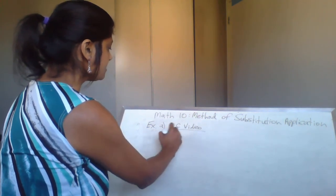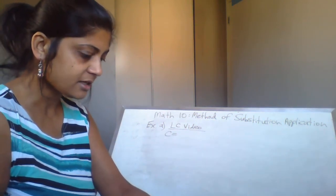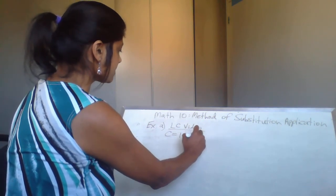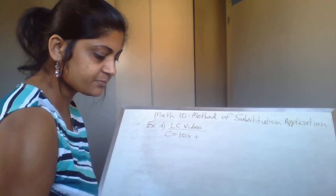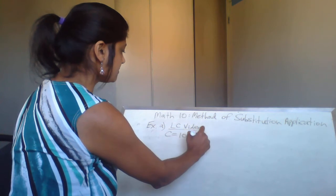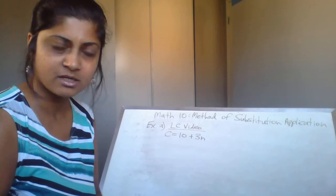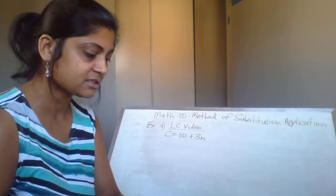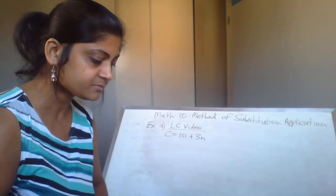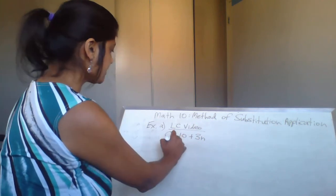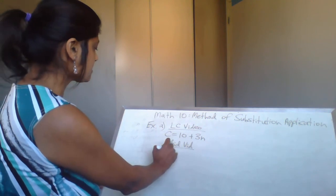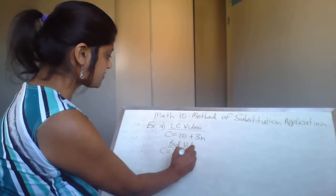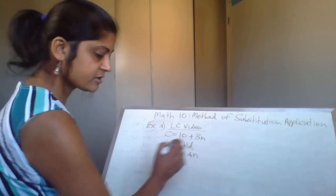So we're going to put LC Video and we're just going to use C for cost. LC Video rents the game machine for $10, so $10 here, and the video games is $3 each, so 3N. In this case, if you read the question one more time, there's only one variable — it's basically the number of video games. And for Big Vid, the cost is going to be $7 for the game machine and $4 each for the video games.